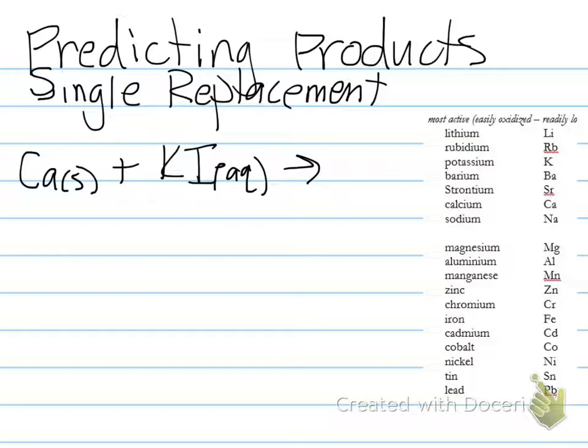remember that we want to take a look at our singleton to see what type of element it is. Since it's a metal, we know that it would potentially trade with the K in the KI compound. So taking a look, we see that on our activity series, calcium is right here, and potassium is above it.